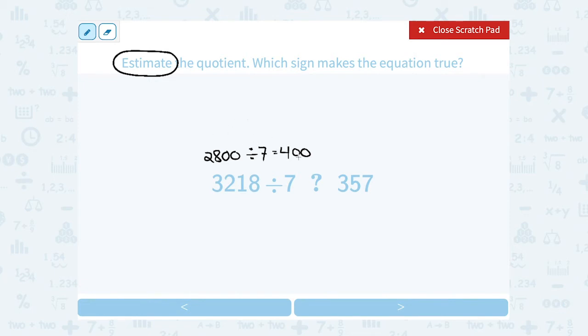So now notice I rounded down. 2,800 is smaller than 3,218. So the answer I get for this actual value should be a little bit bigger than 400. So I'm going to say 400 plus. It's going to be a little more than 400.